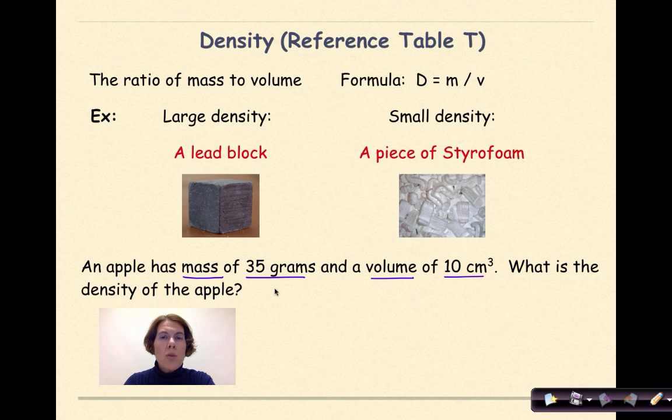The first thing that we're going to do is write out our formula. So density is equal to mass over volume. The mass of our apple is 35 grams.